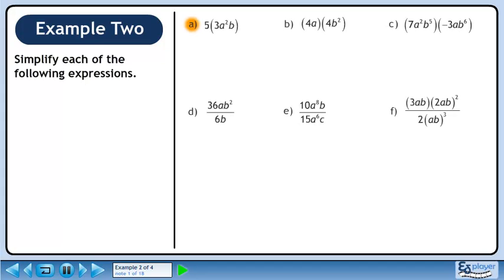Simplify each of the following expressions. Multiply 5 and 3 to get 15. There are no exponent rules required in this simplification.